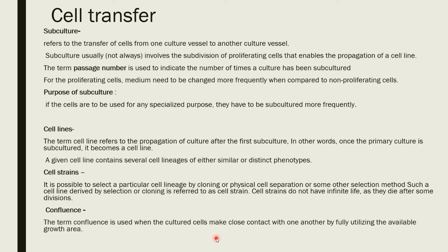Confluence is the term used when cultured cells make close contact with one another so that the space is fully utilized and the substrate is also utilized. In the condition of confluence, we need subculturing.